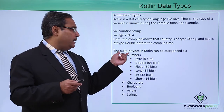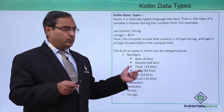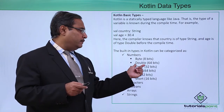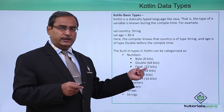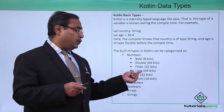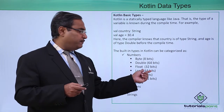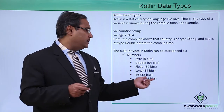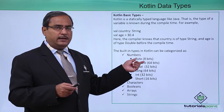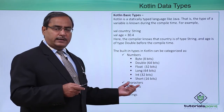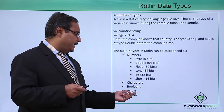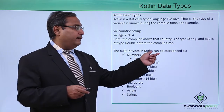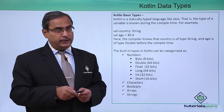In Kotlin, the built-in types are something like this. To represent numbers we have: Byte, which occupies 8 bits; Double, 64 bits; Float, 4 bytes that is 32 bits; Long, 8 bytes that is 64 bits; Int, 32 bits; and Short, 16 bits. We also have data types like characters, booleans, arrays, and strings. These are the built-in types in Kotlin, categorized as shown in the list.